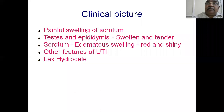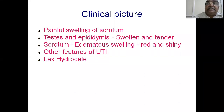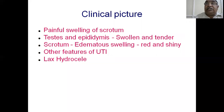The disease epididymo-orchitis presents with general symptoms like fever with prostration, and chills may also be present. Locally, it is a painful swelling of the scrotum. The testes and epididymis, if palpated, are swollen and tender. The scrotal wall is edematous, red, and shiny, with reduced rugae. There may be a lax or small hydrocele which is soft. Other features of urinary tract infection such as burning urination, frequency, and straining may also be present.